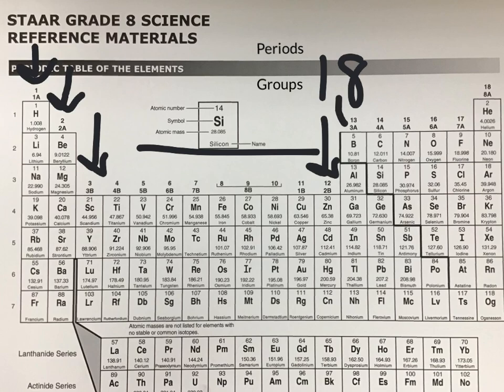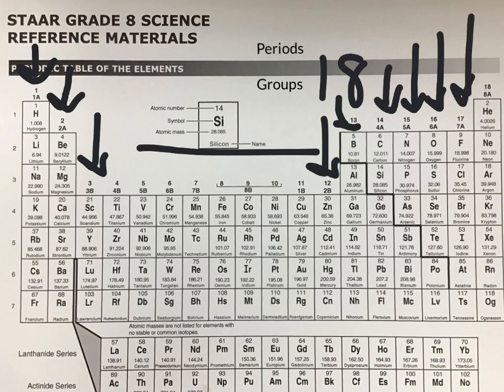Then we pick up at group 13 with boron. Carbon is in group 14. Nitrogen down is group 15. Oxygen is group 16. Group 17 starts with fluorine. And then helium is found at the start of group 18.